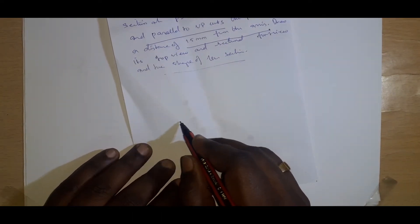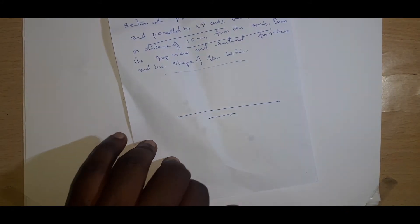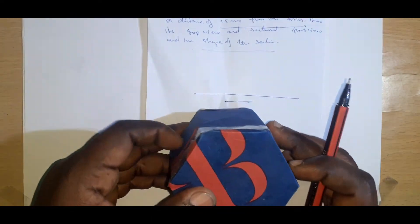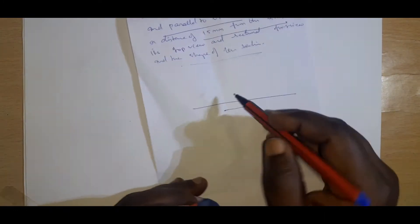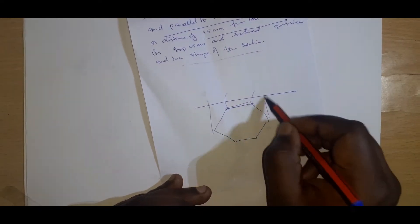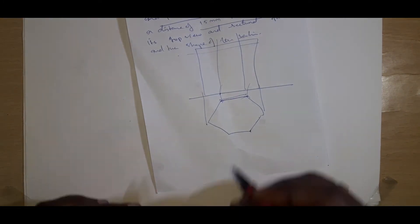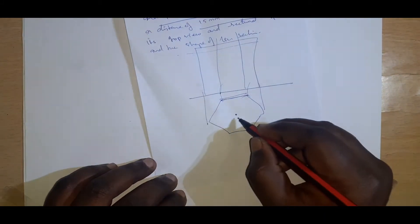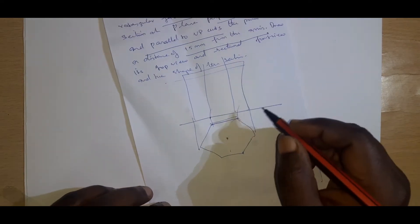15mm from the axis means either nearer to the VP or away from the VP — that is also very important. We need to see the sectioned portion, so we consider this is away from the VP. We have to draw the top view, sectional front view, and true shape of the section. It is said a rectangular face has to be parallel to VP — this edge has to be parallel here. The base is 30mm.